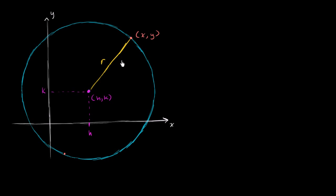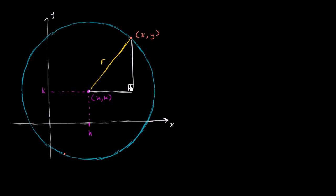It might not jump out at you immediately, but we can actually use the Pythagorean theorem. All we need to do is draw one segment going from the center that is parallel to the x-axis, going like this. And let's draw another segment starting at x, y that is parallel to the y-axis — completely vertical. So this one is completely vertical and this one is completely horizontal, so this is going to be a right angle right over here.